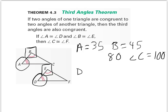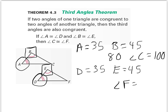For example, if angle A is 35 and angle B is 45, those combine to 80, meaning angle C would be 100. Since A is congruent to D, angle D is 35. Since B is congruent to E, angle E is 45. That leaves no option — angle F must also be 100 degrees.